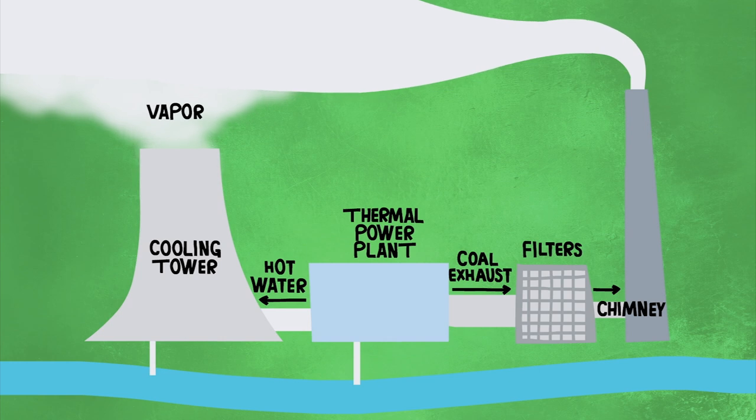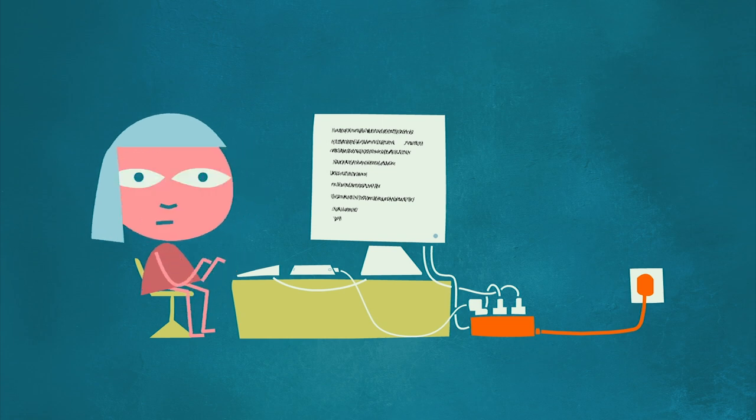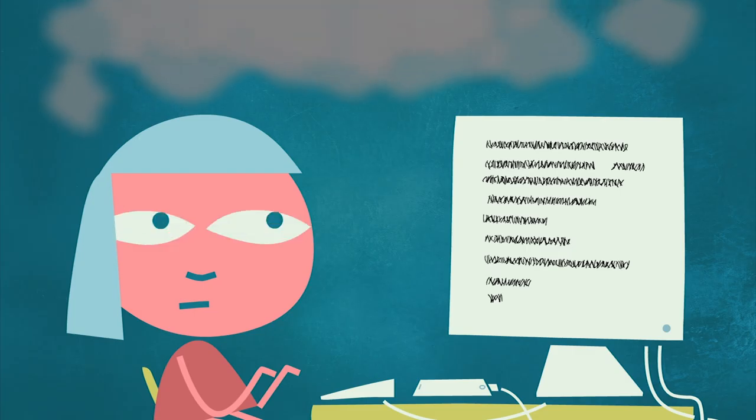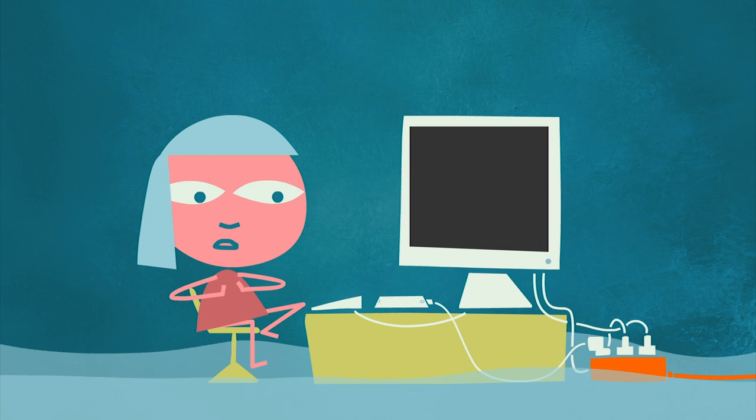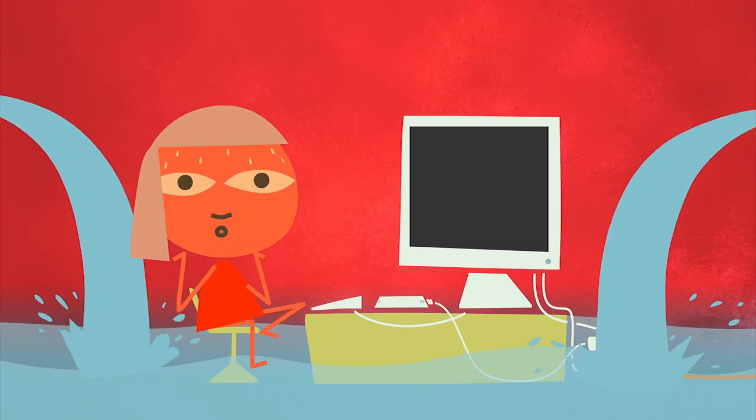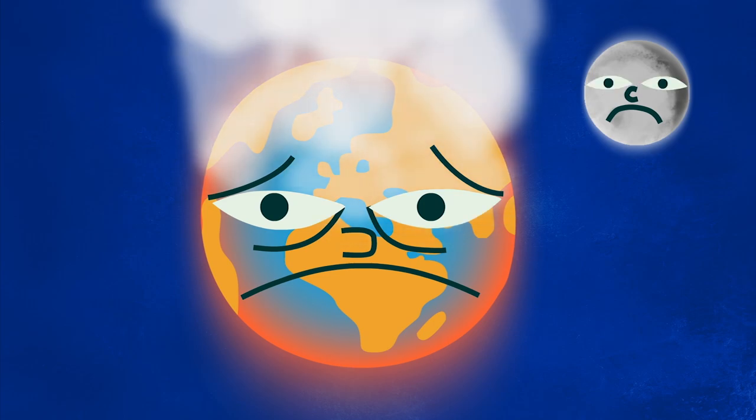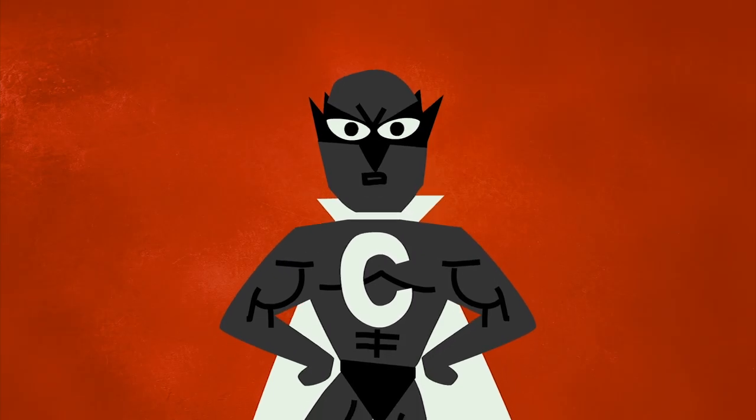Since then, many countries have deployed technology to remove most of these pollutants before they reach the air. But now we have a new air pollution problem on our hands, one that doesn't show up in a cloud of dark smog, but in rising seas, floods, and heat waves. It's global climate change. And again, the main culprit is coal.